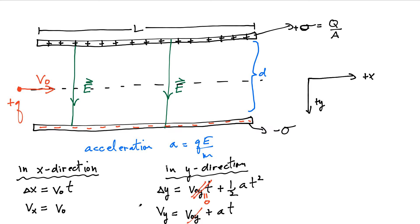This problem is exactly identical to throwing an object horizontally from a cliff and finding how far it goes. We want the range to equal the length of the plates, L. We're going to set our y displacement to its maximum value: when the y displacement equals d over 2, we get the maximum deflection of the charged particle as it exits the plates.